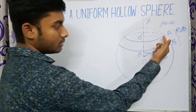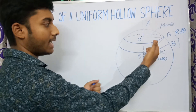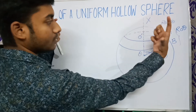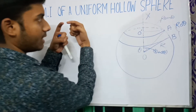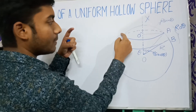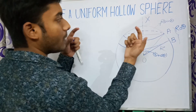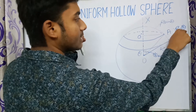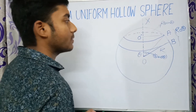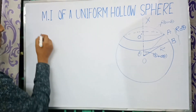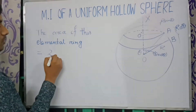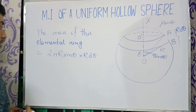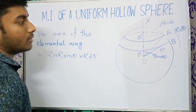If we cut and unfold the elemental ring, it looks like a rectangular strip. The length of the long side is the periphery of the circle, that is 2πR·sinθ, and the short side is R·dθ, the width of the ring. So the area of the elemental ring is 2πR·sinθ · R·dθ.